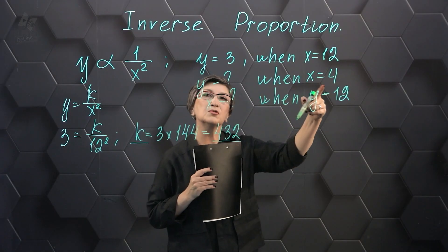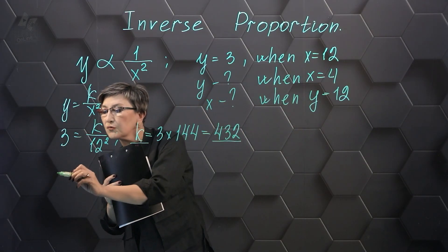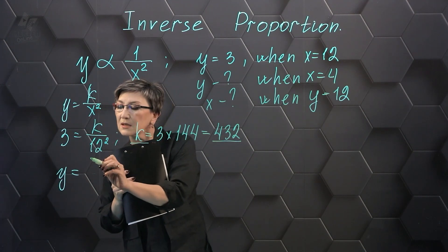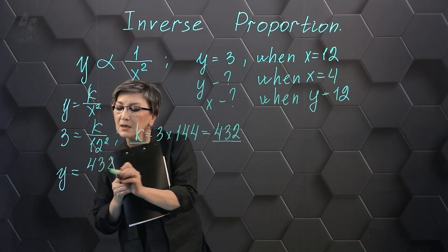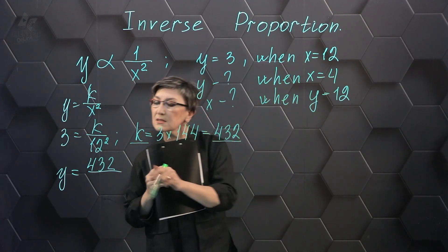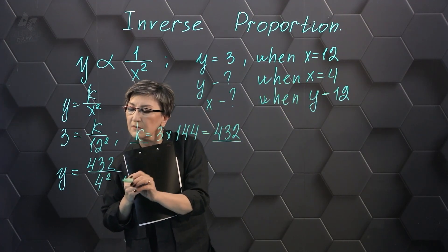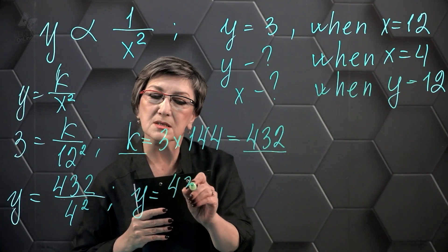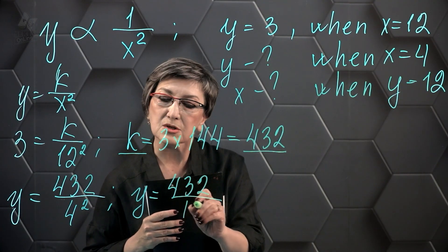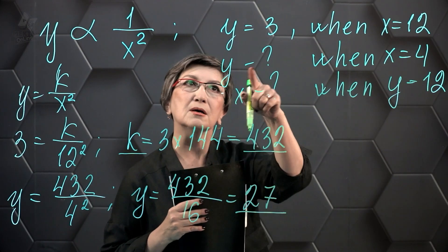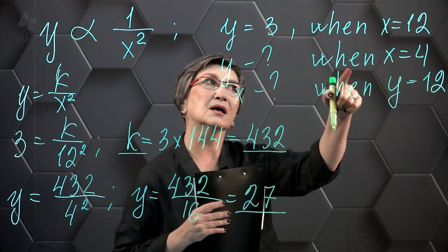And now we can find the value of Y. Substitute it into our formula and write it down. Y equals 432 divided by 4 squared. The result is Y equals 432 divided by 16, that's 27. Y will equal 27 when X equals 4.